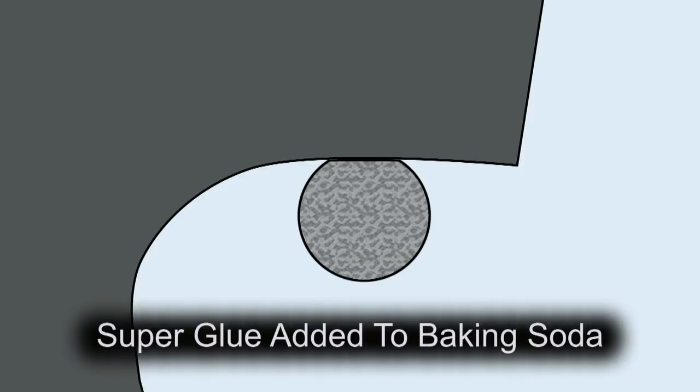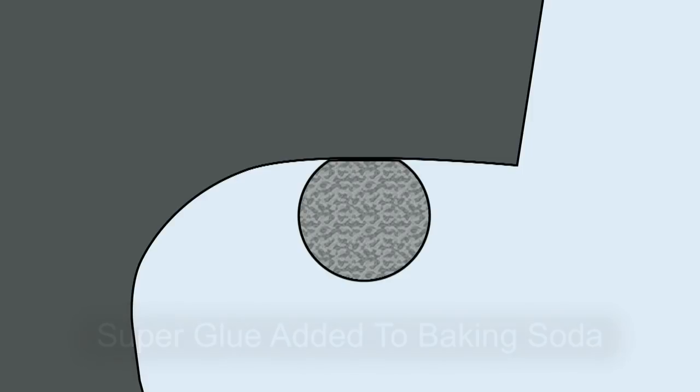Once you've got that filled to your liking, and if you need to you can do this in stages, you come back on top of that with a drop of super glue. The smaller the better because that'll absorb down into the baking soda and it'll be soaked into that baking soda and it'll set almost instantly.